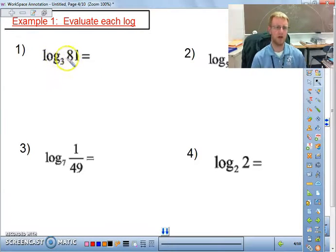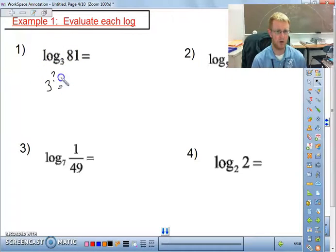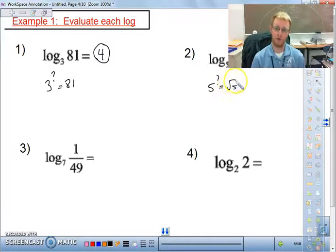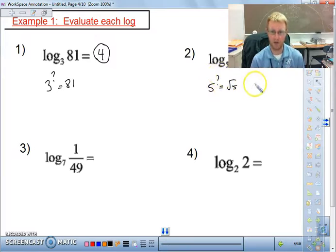We have log base 3 of 81. Basically, this is asking 3 to what power equals 81? You can do that pretty easily and realize the answer is 4. We look at the second one, log base 5 of the square root of 5. So that means we have 5 to what power equals the square root of 5?